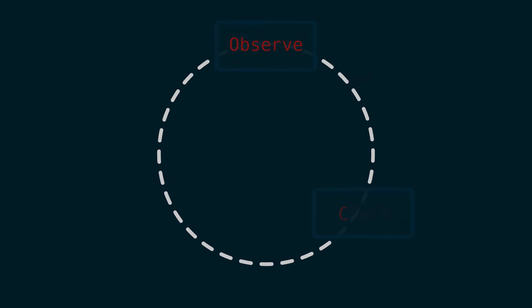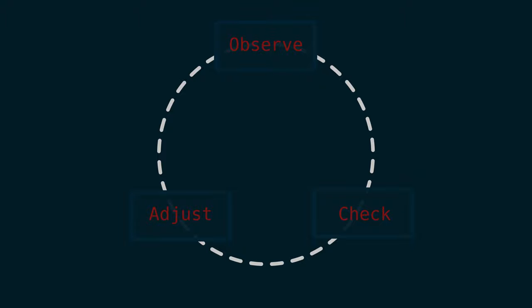The controller is just some logic about how something is supposed to be managed, and is usually visualized as an observe-and-adjust loop: observe the current state, compare it to the desired state, and adjust the state. The state just holds information of what the desired state of the resource is, and the resource is the thing that you are managing.